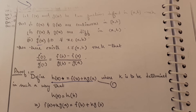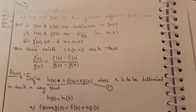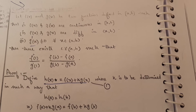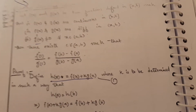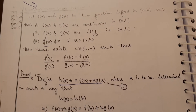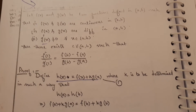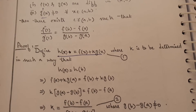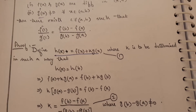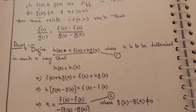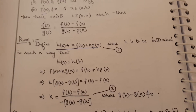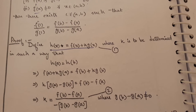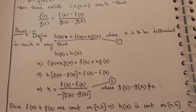Cauchy's Mean Value Theorem — this is also very important. Let f(x) and g(x) be two functions defined on closed interval [a, b] such that: first, f(x) and g(x) are continuous on [a, b]; second, f(x) and g(x) are differentiable on open interval (a, b); and g'(x) ≠ 0 for all x in (a, b). Then there exists c in (a, b) such that f'(c) / g'(c) = [f(b) - f(a)] / [g(b) - g(a)].